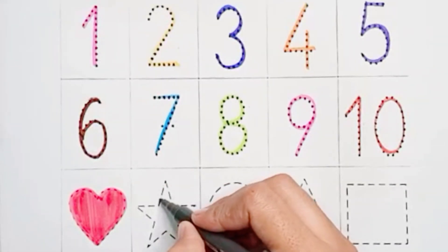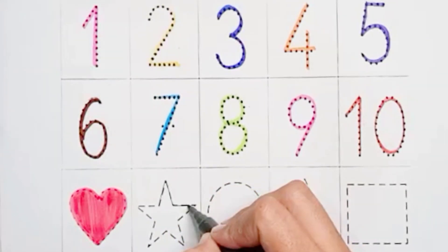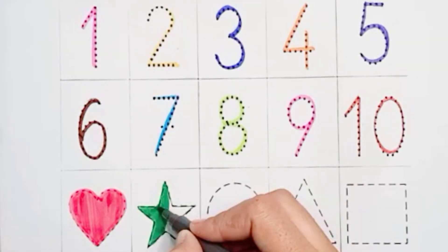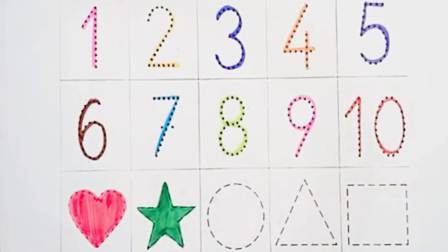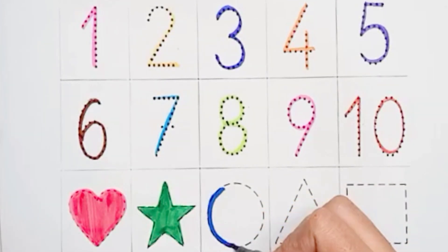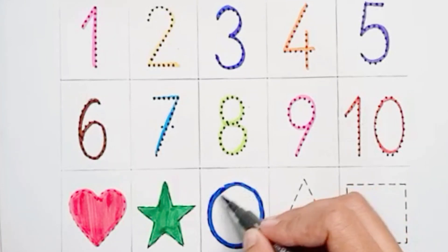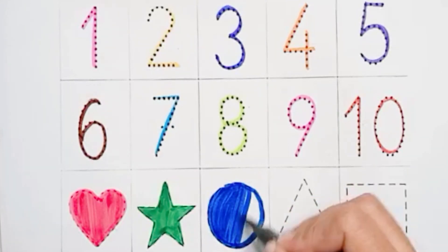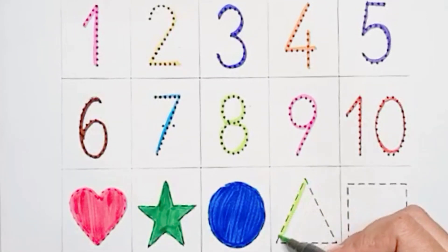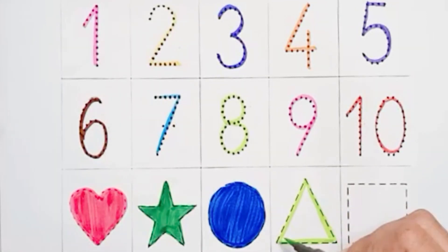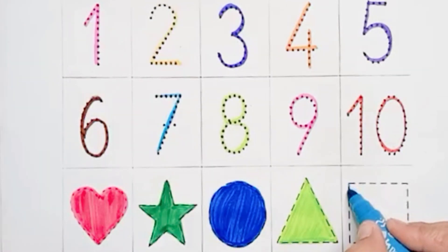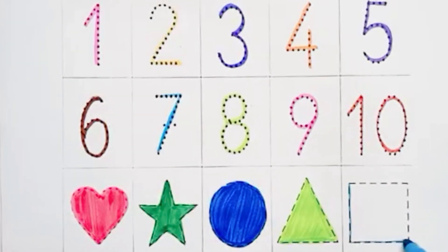Dark green color, star. Dark blue color, circle. Light green color, triangle. Sky blue color, square.